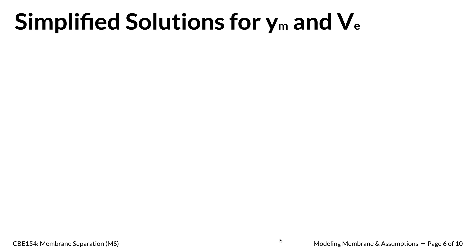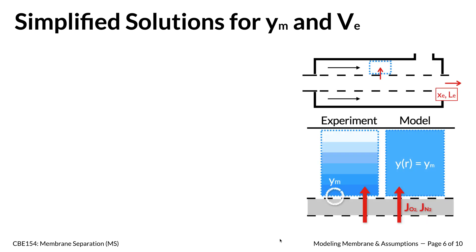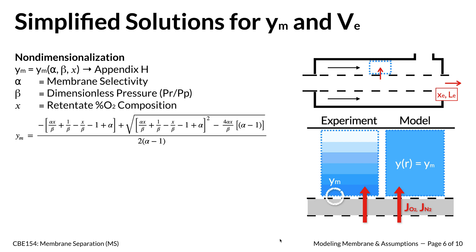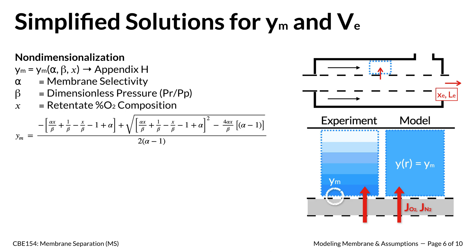We began by assuming homogeneous composition of oxygen on the tube and shell side. By assuming no spatial concentration gradients, we can treat the mole fraction as a constant rather than a function depending on radial position. The oxygen concentrations on the tube side and at the membrane were assumed equal, denoted as y sub m. We then non-dimensionalized pressure and rearranged the expression to get a quadratic equation, where y sub m is the solution to that quadratic. All derivations are shown in the Appendix.